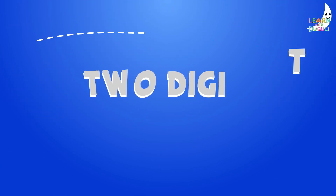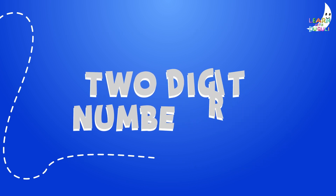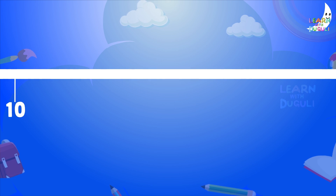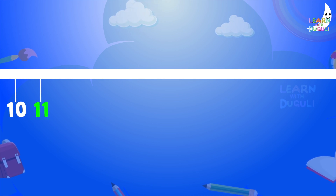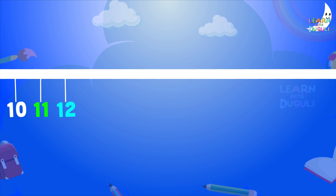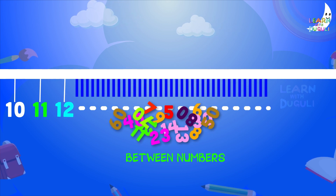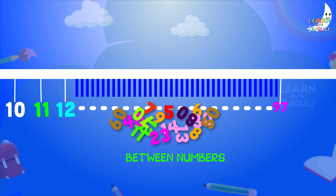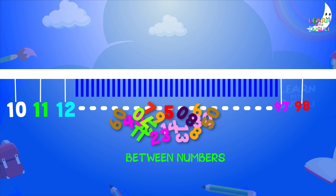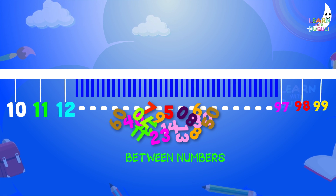Two digits number line. Nine, ten, eleven, twelve... ninety-seven, ninety-nine.